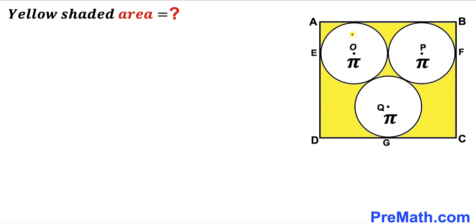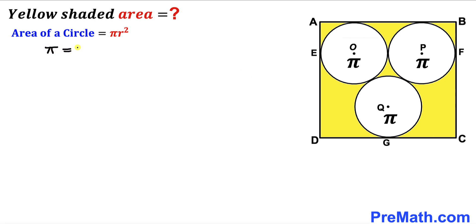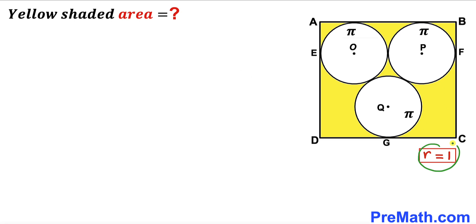We are going to calculate the radius of these circles. Since all circles are identical, let's assume the radius is lowercase r. Recalling the area of a circle formula: Area = πr². The area is given as π, so π = πr². Dividing both sides by π gives r² = 1. Taking the square root, our radius r turns out to be 1 unit.